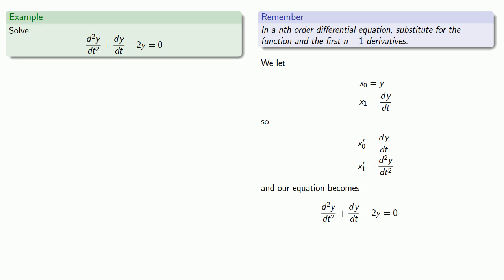And so our equation becomes: we'll replace the second derivative with x1 prime. Now, dy/dt could be replaced with either x1 or x0 prime, and the general rule here is we only want one derivative per equation. So we already have x1 prime, so we'll replace dy/dt with x1. And we'll replace y with x0.